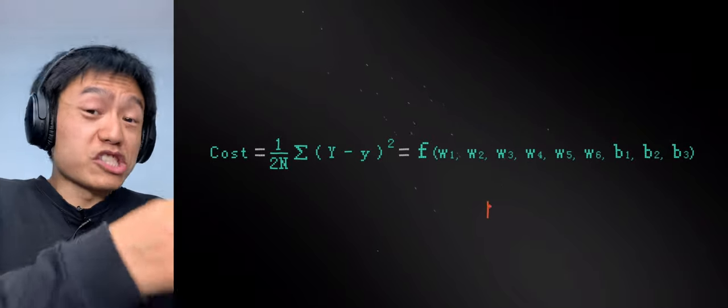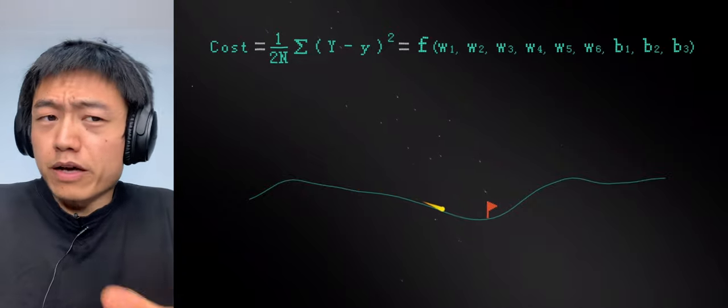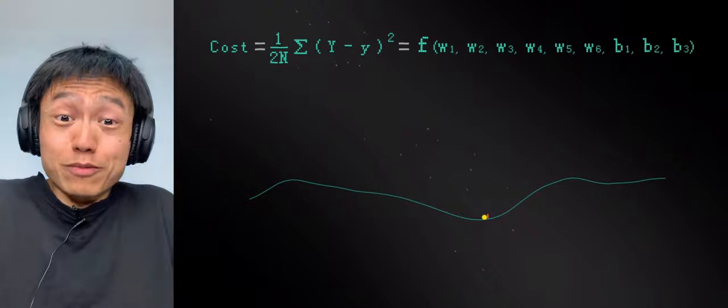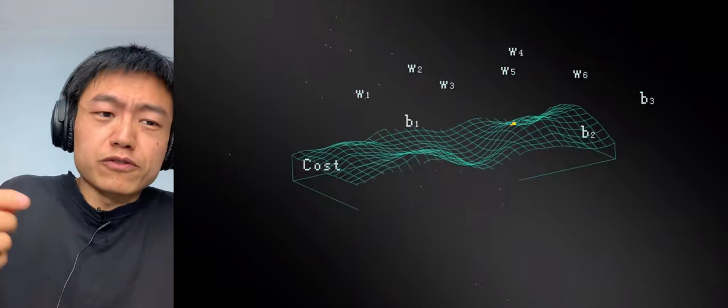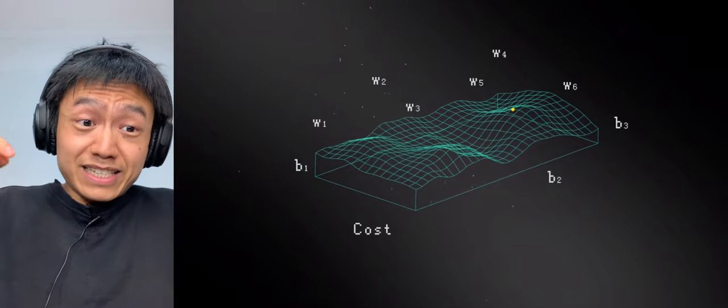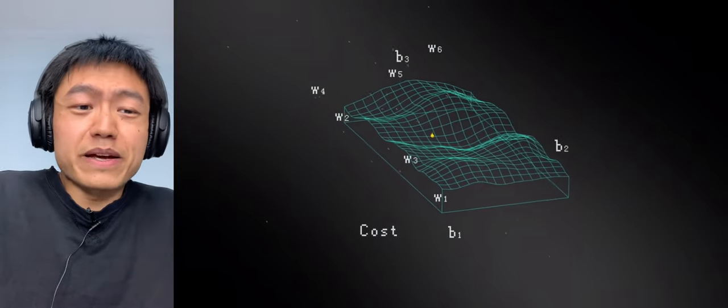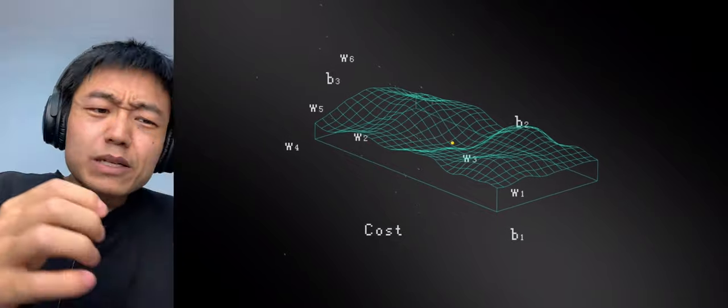With this, we can give the machine a clear goal to make the loss function as low as possible. Let's visualize the concept as a downhill problem. These 9 variables and low values form a hill in 10-dimensional space. Robots need to climb and climb and climb in these 10 spaces until it reaches its lowest point.